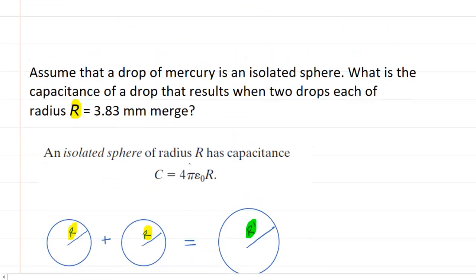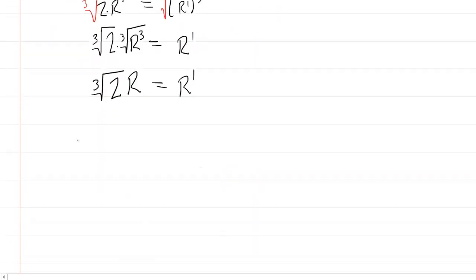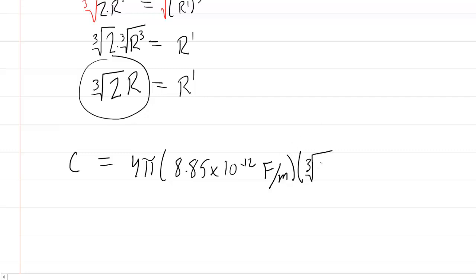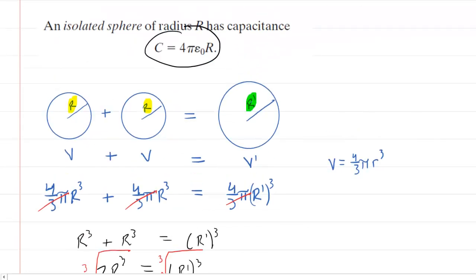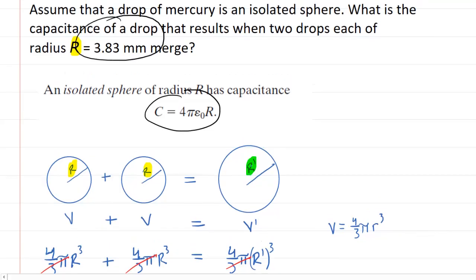Now, we're ready to calculate the capacitance. We're going to use this equation right here, 4π epsilon times r. So, we'll have 4π times epsilon, which is 8.85 × 10⁻¹², and that unit is farads per meter, multiplied by the radius. The radius of the larger sphere we just determined is the cube root of 2 times r. So, r was given in this question as 3.83 millimeters.